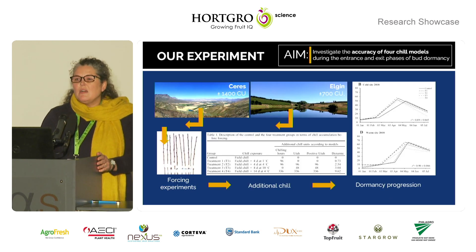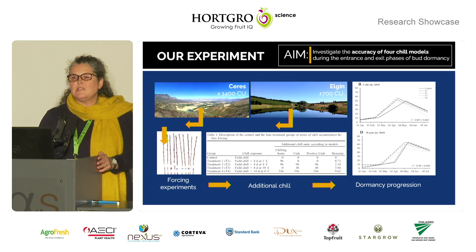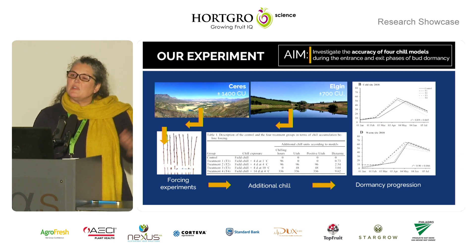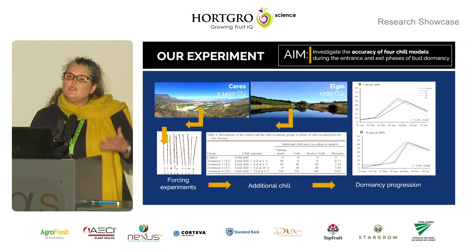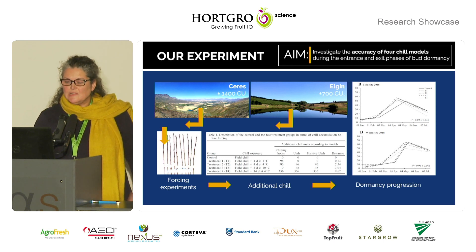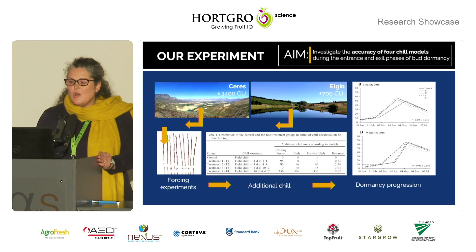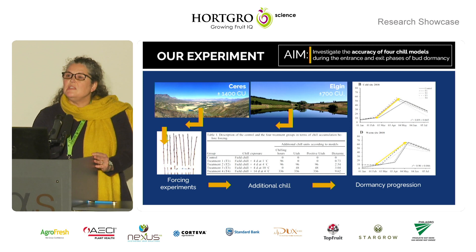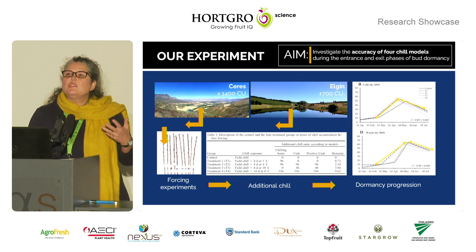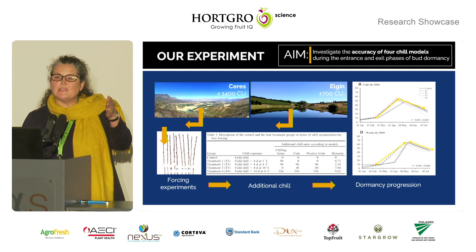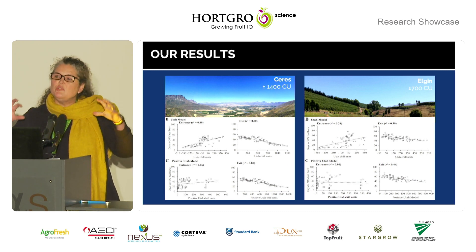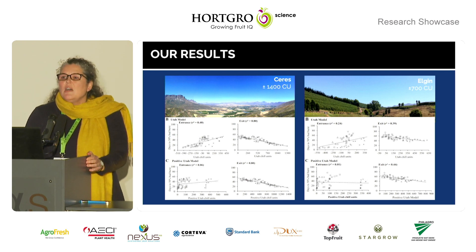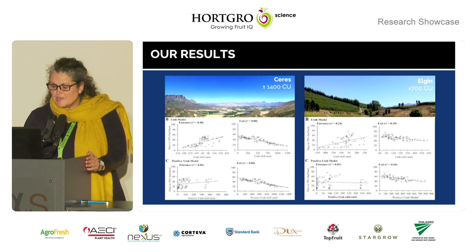Our aim was to investigate the accuracy of these four models in terms of the entrance and exit phases of dormancy. We did forcing experiments by collecting shoots from two contrasting areas, Ceres and Algin, and once we had the shoots back in the lab, gave them additional chill in various ways according to these models. We then used our data to plot dormancy progression curves, and this modeling allowed us to understand which samples belong to the entrance into dormancy phase and which belong to the exit phase, enabling us to investigate the accuracy of how these models predict chill accumulation.